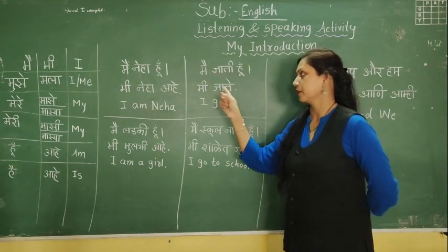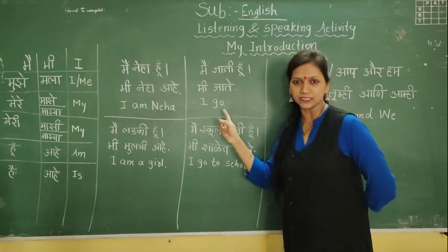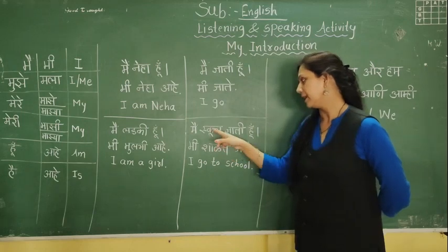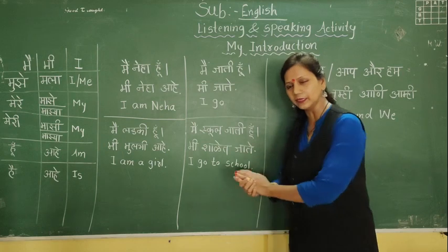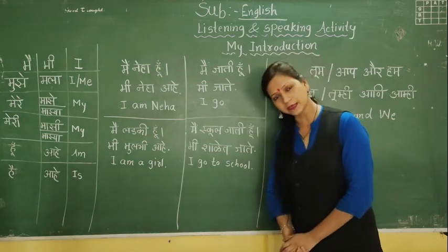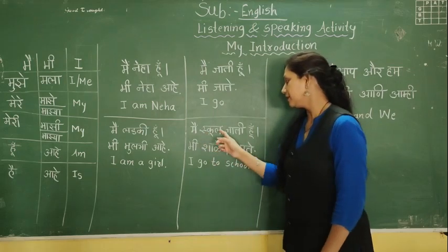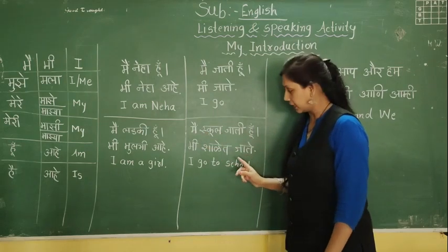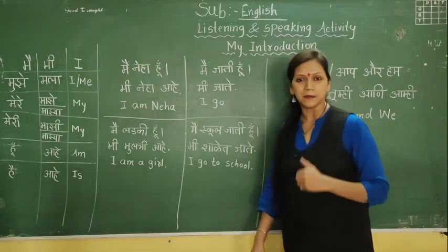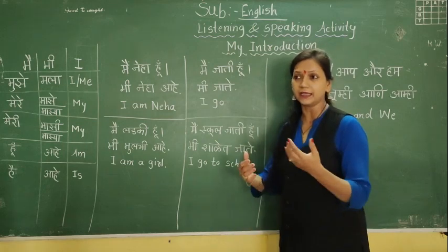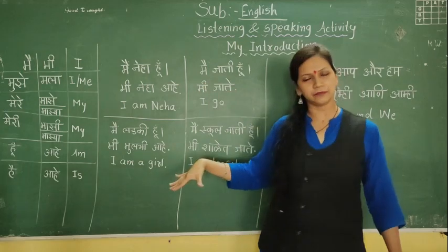Next sentence: 'मैं जाती हूँ' in Hindi, 'मी जाते' in Marathi, 'I go' in English. In English we say I go. So, मैं स्कूल जाती हूँ — practically I know you are not going to school, but you can also use market. मैं स्कूल जाती हूँ, मी शाळेत जाते, I go to school. You can also say I go to market.